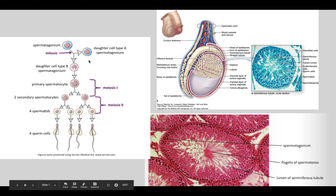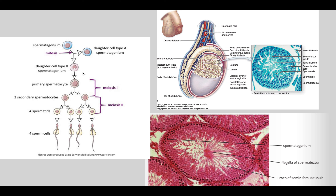In the diagram of spermatogenesis: spermatogonia keep dividing, the larger one becomes the primary spermatocyte. After meiosis one, you have two secondary spermatocytes. After meiosis two, you have four spermatids. As they develop their tails, we call them sperm cells.